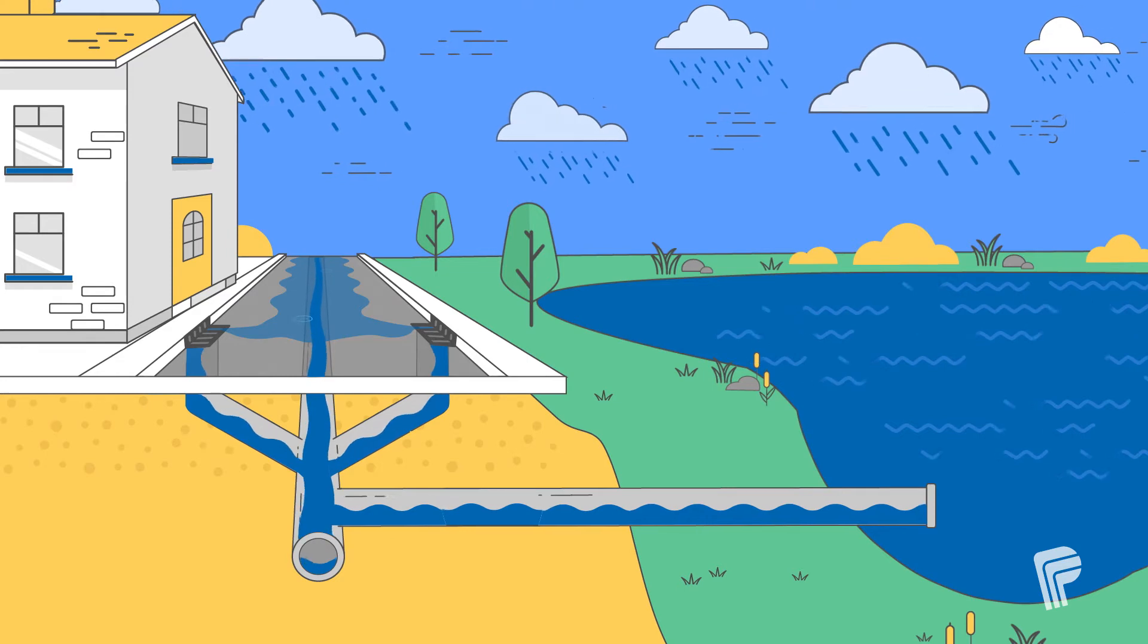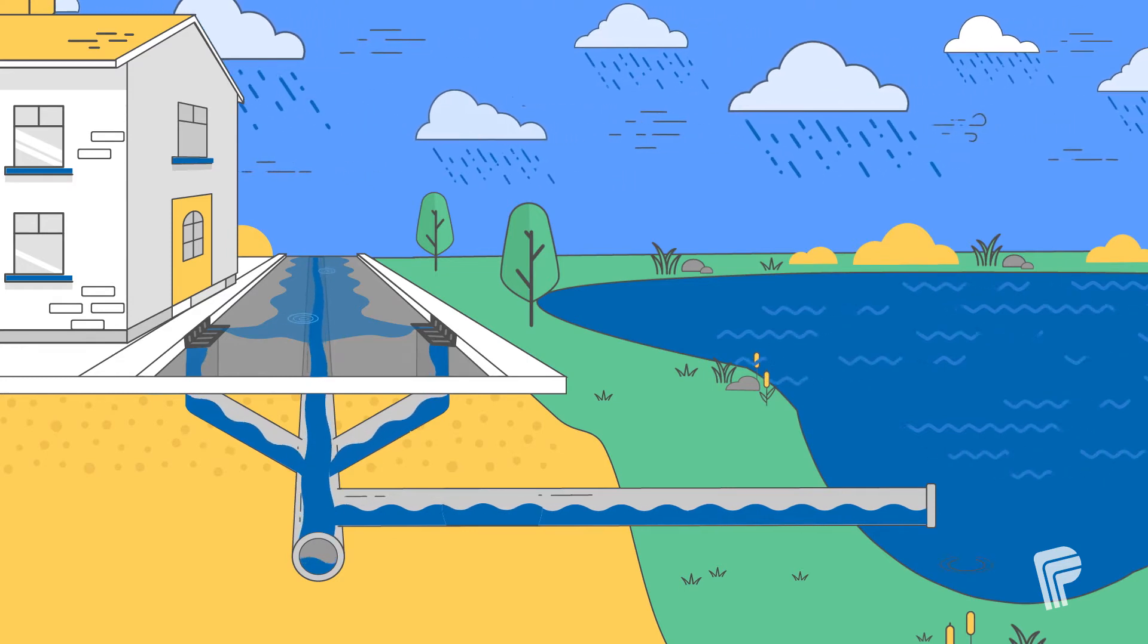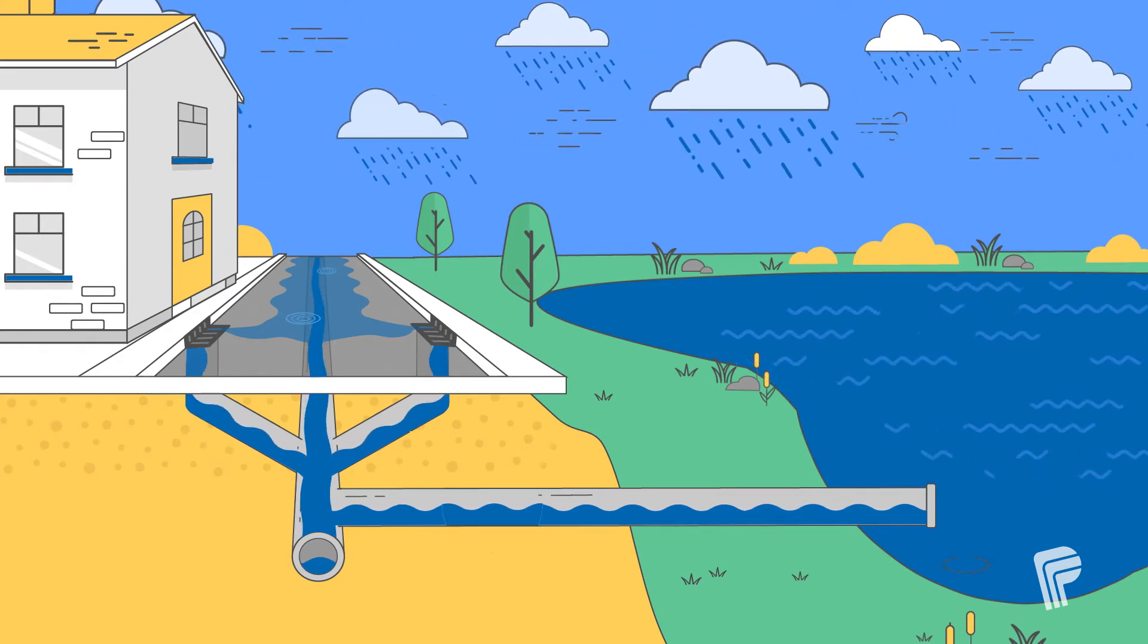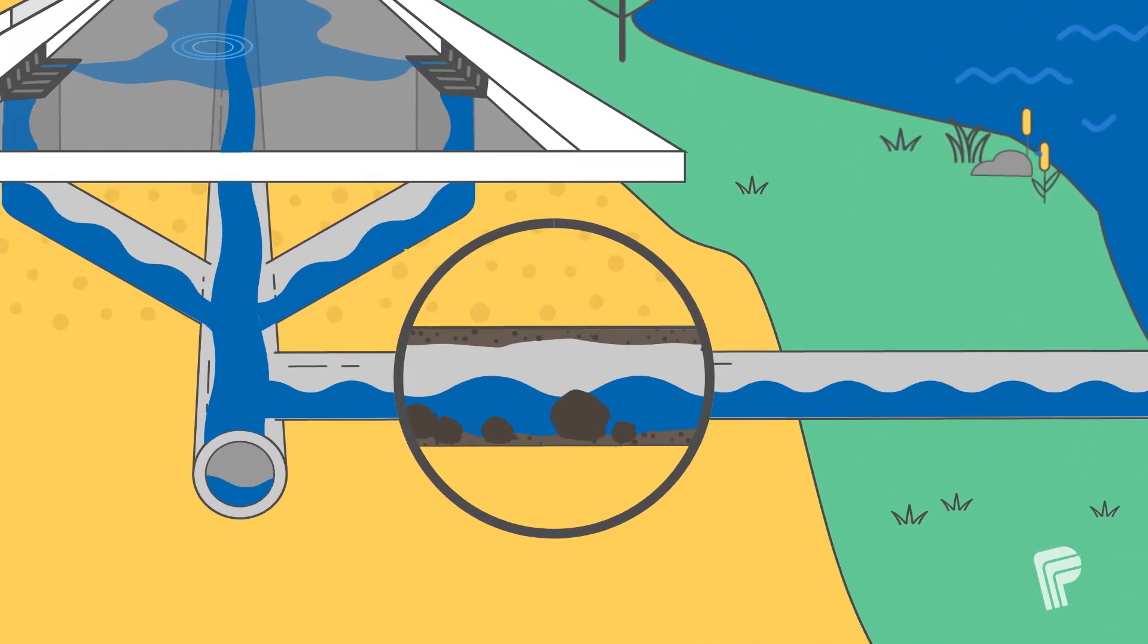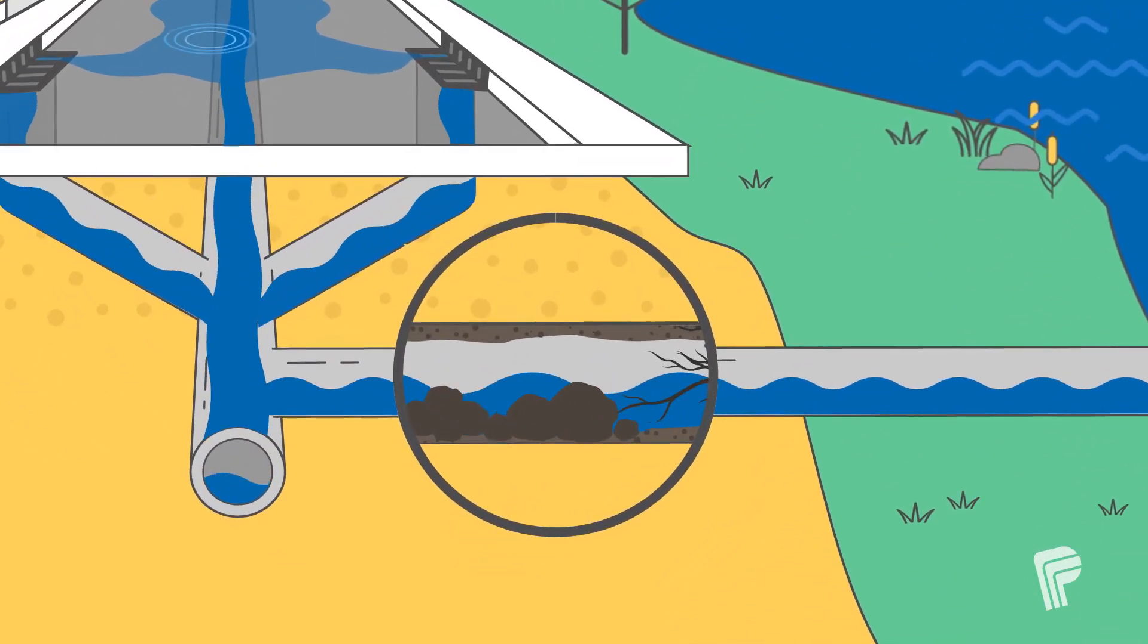If stormwater infrastructure ages, a regular renewal or replacement plan is required. The region is continuously evaluating the condition of its existing network to better plan future work.